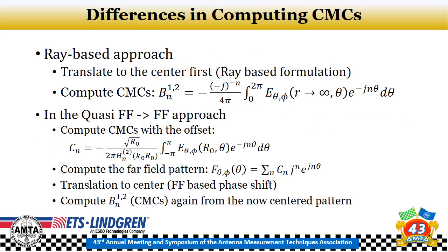This slide highlights the difference between the two approaches. In the ray-based approach, you translate the antenna from the measurement to the center using the ray-based formulation, then compute the cylindrical mode coefficients using a Fourier transform. In the quasi-far field to far field approach, you compute the CMCs with the antenna offset — sampling the entire quiet zone size — then calculate the CMCs using a more complex formula as shown on screen, compute the far field pattern, translate to the center using a far field phase shift, and then compute the CMCs again from the now-centered pattern.